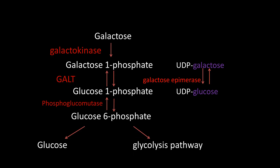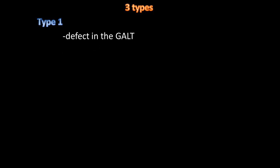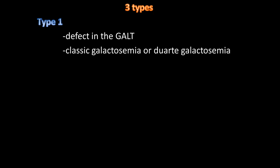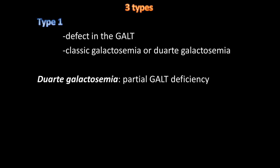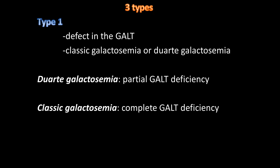You should know there are three types of galactosemia. Type 1 is when the defect is in the enzyme galactose-1-uridyl transferase (GALT). This is called classic galactosemia. There is also Duarte galactosemia, which differs from classic in that patients with Duarte galactosemia have only partial GALT deficiency, whereas classic galactosemia involves complete or almost complete GALT deficiency. Duarte galactosemia is therefore the milder form.